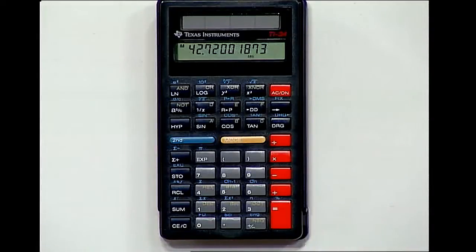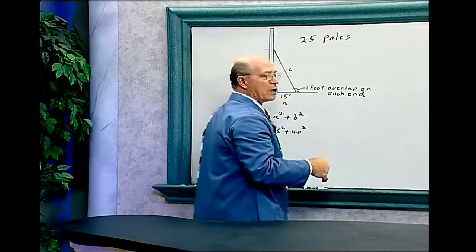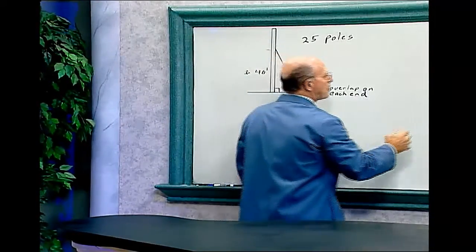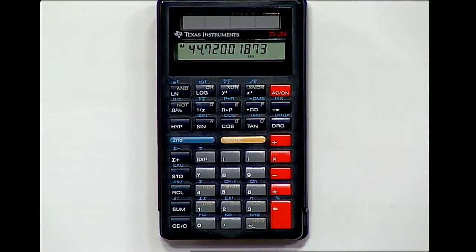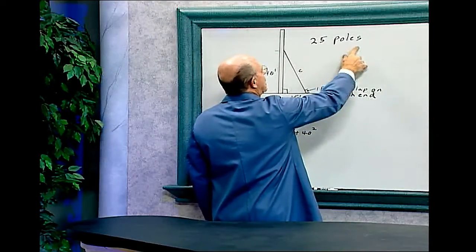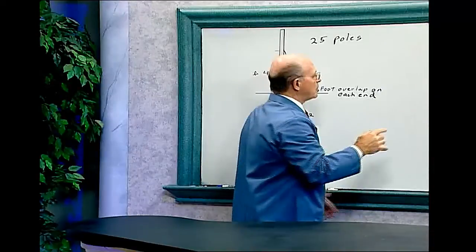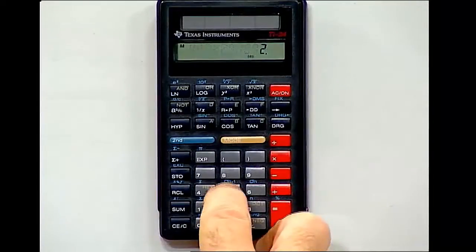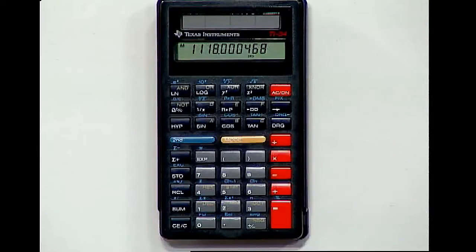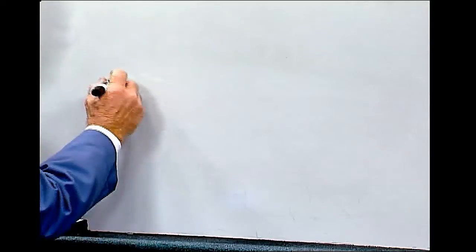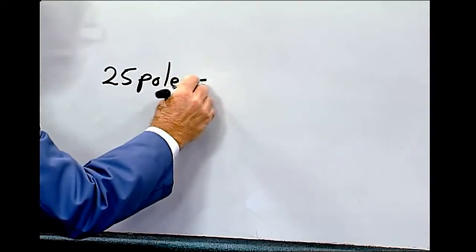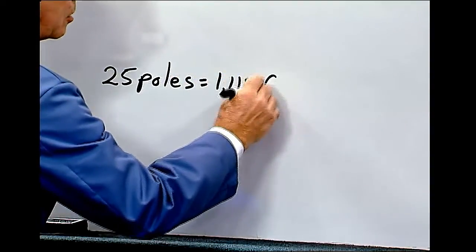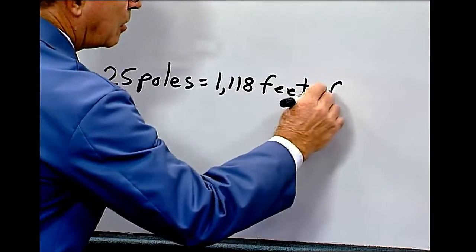And then remember there's one foot on each end, so we have to add two feet onto this cable, plus two equals, and there's 25 poles that we have to fasten in this manner. So we have to multiply that by 25. That gives us 1,118 feet of cable. So for 25 poles, you'll need 1,118 feet of cable.